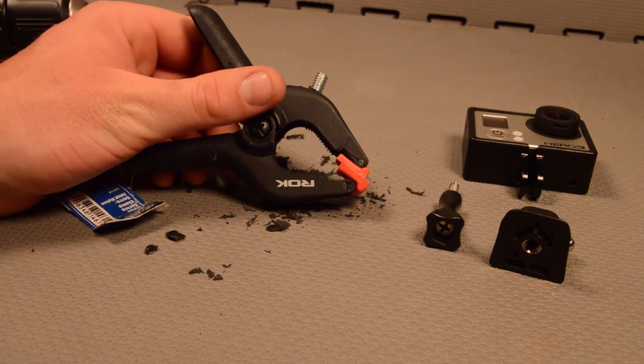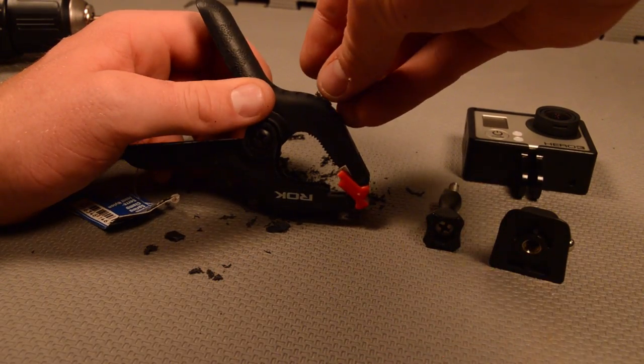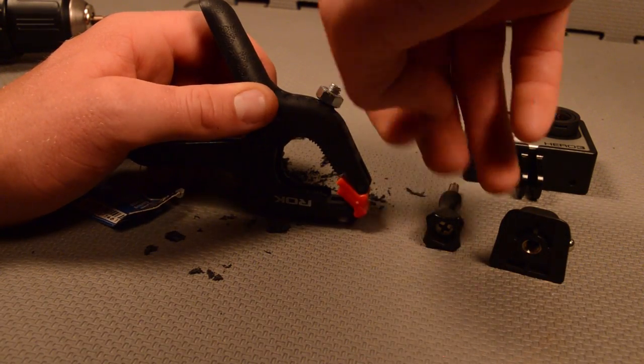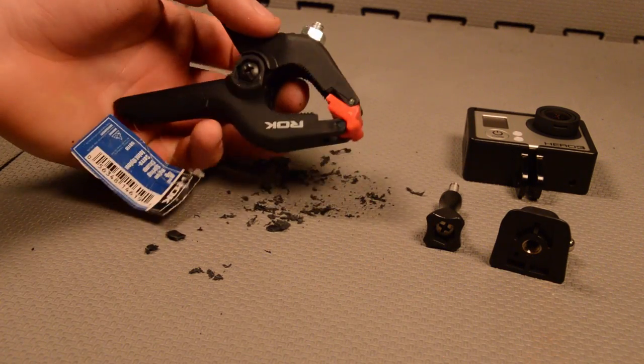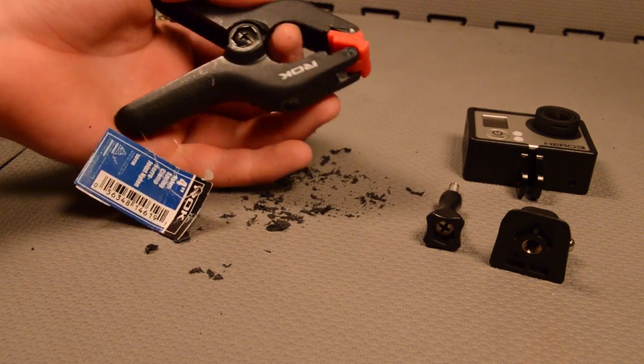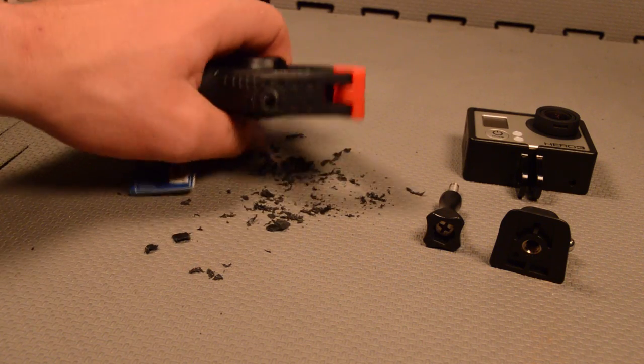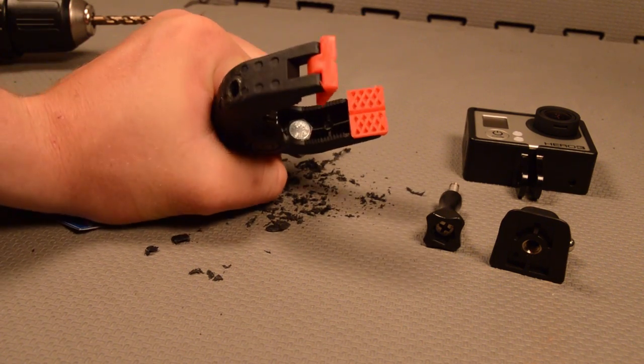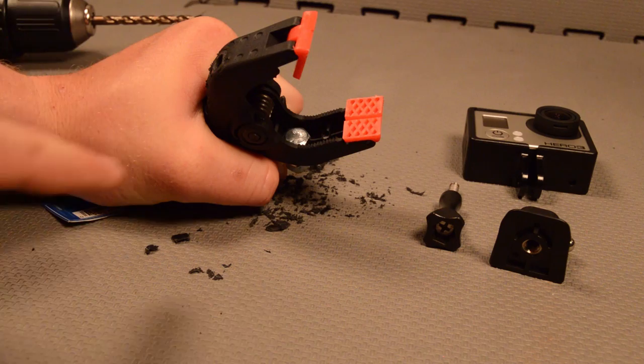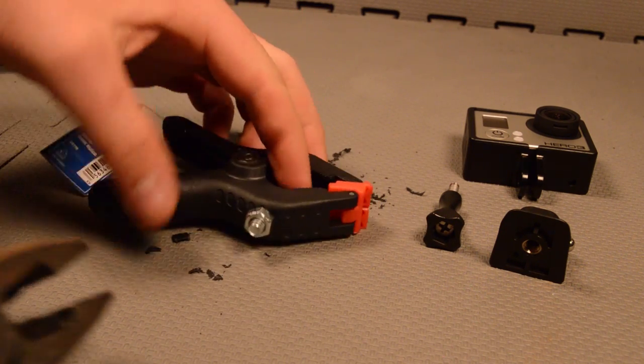Then we're just going to grab our first nut, slide that on. And then as we tighten this, it's going to pull the bolt through all of the plastic parts of the clamp that are in the bottom. We'll just tighten this up.